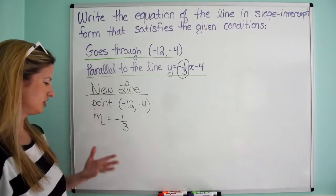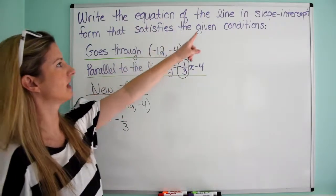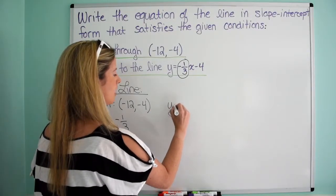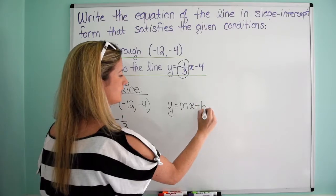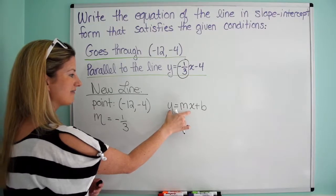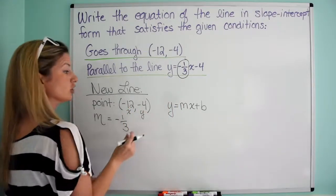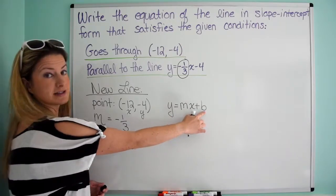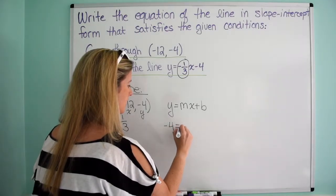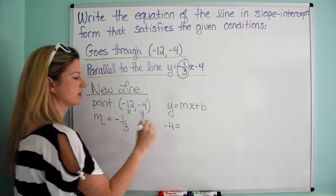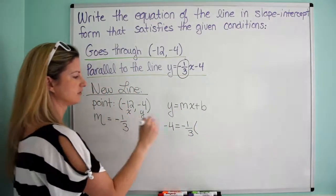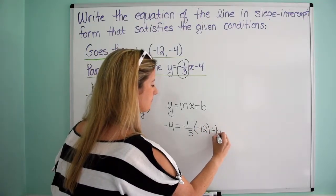Here's where we have two options. Way one: if we want the line in slope-intercept form, we write out y equals mx plus b. We know what m is, and we have an x and a y from our point. So we plug in y, m, and x, and solve for b. So y is negative 4, and that equals m, which is negative one-third, times x, which is negative 12, plus b.